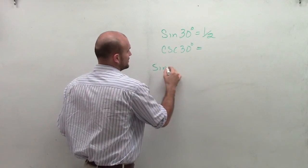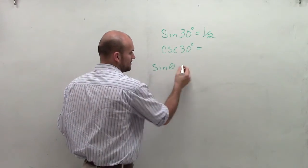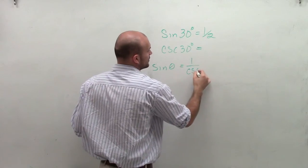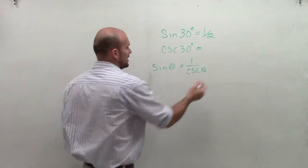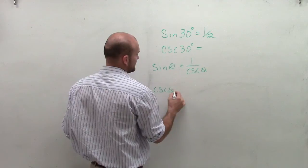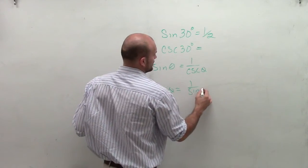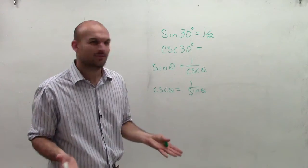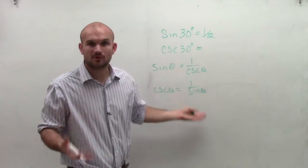So the couple things we write is sine of any angle theta is equal to 1 over cosecant of theta. And the same way can be written as cosecant of theta equals 1 over sine of theta. So what does that mean? What that means is these are what we call reciprocals of each other.